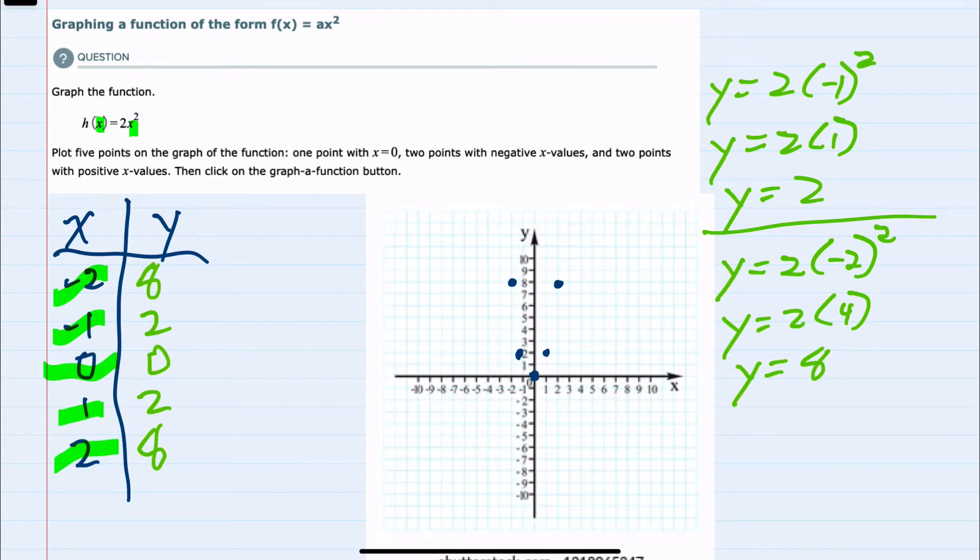And then knowing that this is a parabola, we can graph that u shape by connecting these five dots.